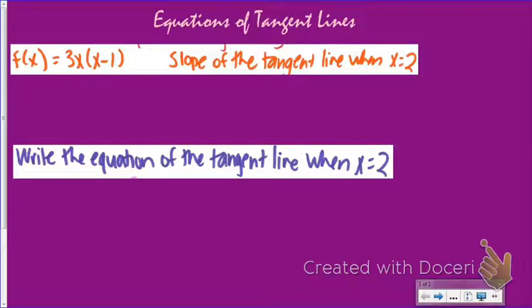Today we're going to take what we've learned so far about derivatives and add some algebra to do a couple new things. We're going to start by finding the slope of a tangent line at a specific point. The slope of the tangent line is the derivative, so I'm looking for the derivative when x equals 2. Soon we'll learn the product rule, but for now the easiest way is to distribute.